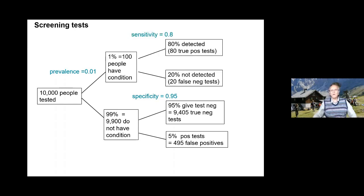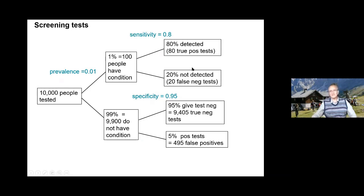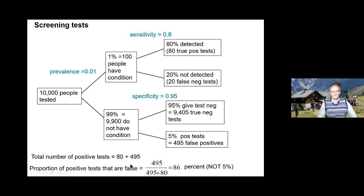You've got 100 people who have the condition. If the sensitivity of the test is 80%, that's like the power of a significance test, then you get 80 true positives. So the total number of positive tests is 80 plus 495.